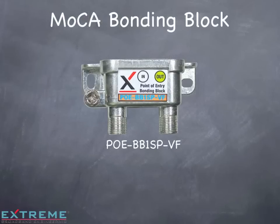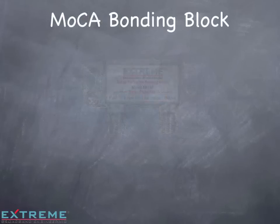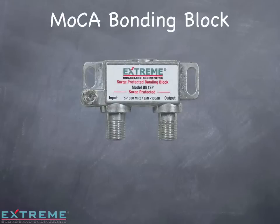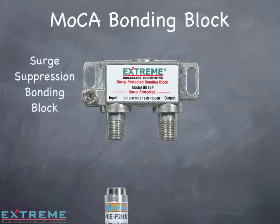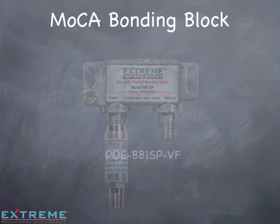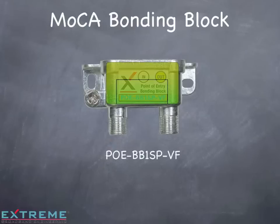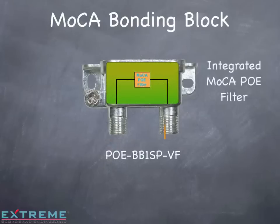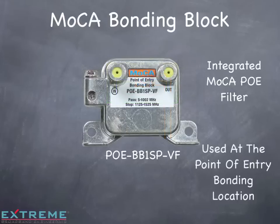The MoCA PoE-BB1SP-VF bonding block takes a stand-alone surge-suppressant bonding block and MoCA filter and integrates them into one device. This is normally used at the point-of-entry bonding location.